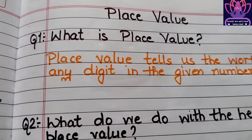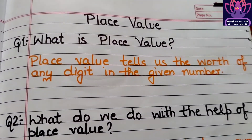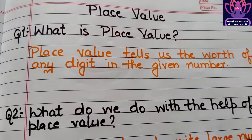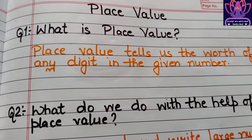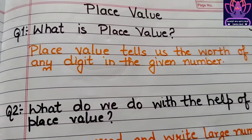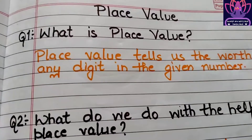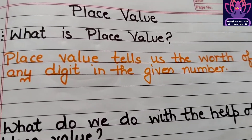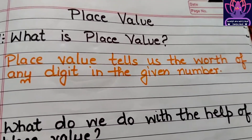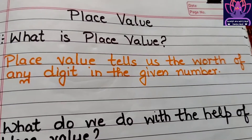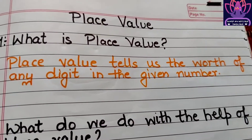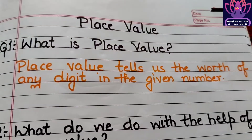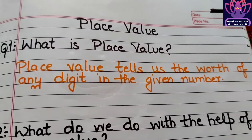Place value tells us the worth of any digit in the given number. If you have a given number, there is a particular place for every digit. Whatever the value of that place is, we call it the place value.